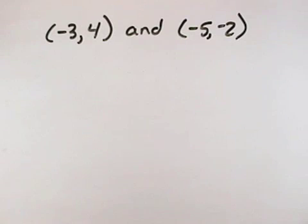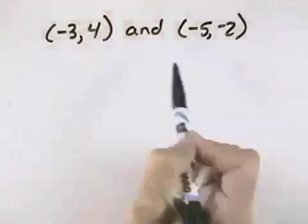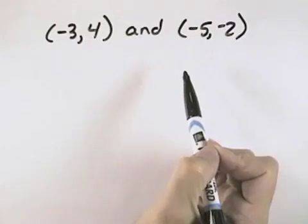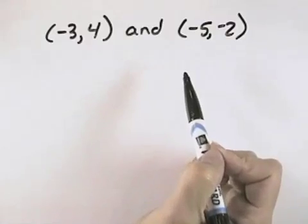In this exercise, calculate the slope of the line passing through these given points. If the slope is undefined, so state, and then we'll indicate whether the line rises, falls, is horizontal, or vertical.